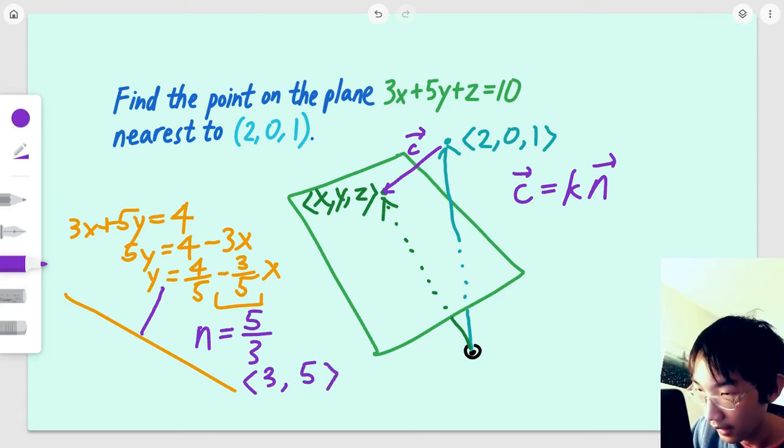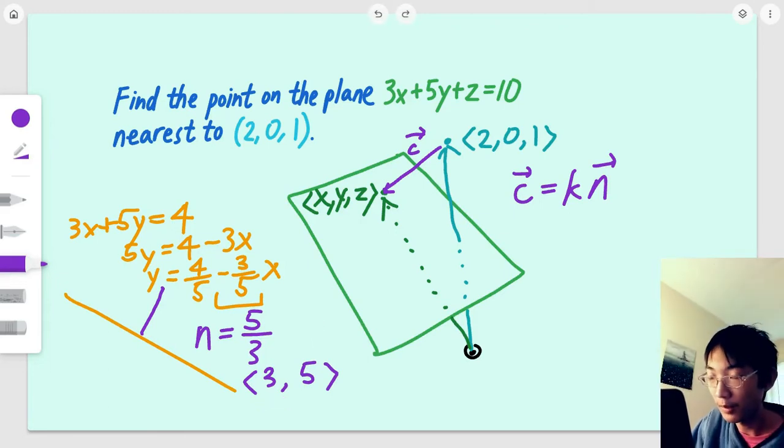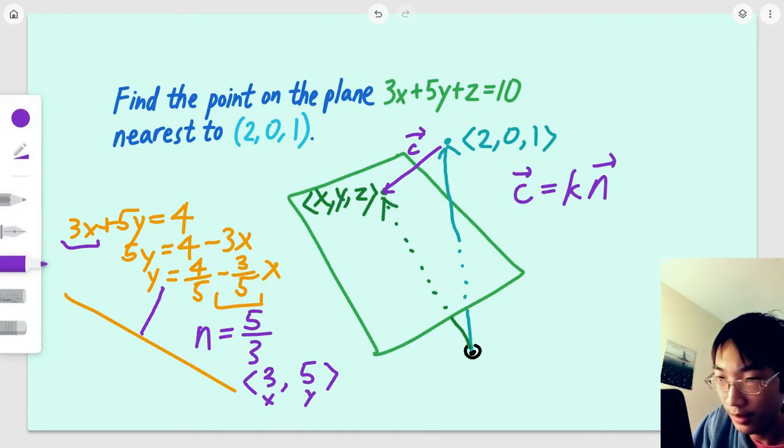You might notice a pattern here, in that 3 being our x component matches with the 3x in the standard form, and 5 being our y component matches with the 5y in our standard form.